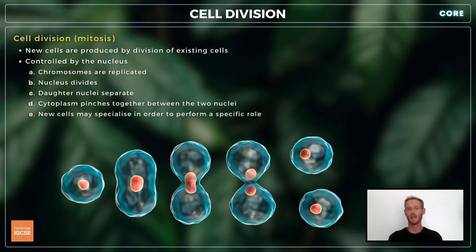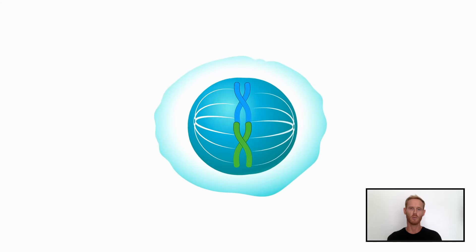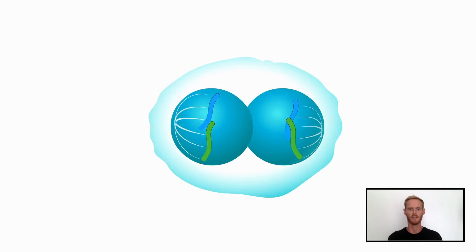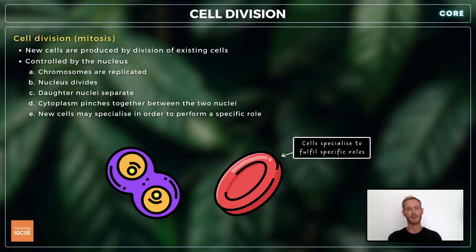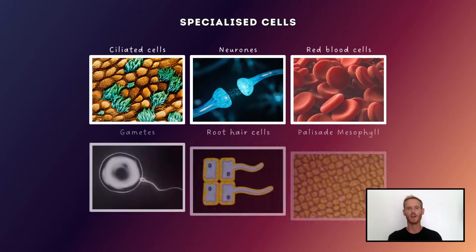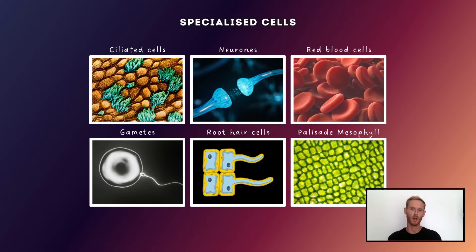Next, you need to know a little bit about how new cells are produced, although this will be covered in greater detail in chapter 17. The process by which new cells are produced is known as mitosis, or cell division, and is controlled by the nucleus. First, the chromosomes are replicated and then the nucleus divides. Of the two cells that are formed, one may keep the ability to divide, while the other may become a specialized cell with a specific shape and function. Multicellular organisms possess a wide variety of specialized cells, and there are six specialized animal and plant cells that you need to know.